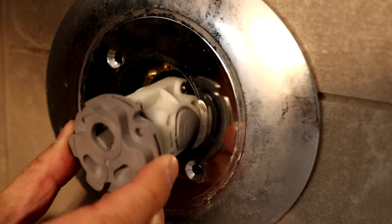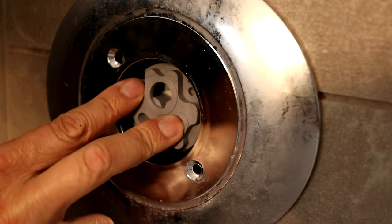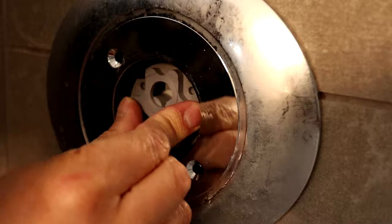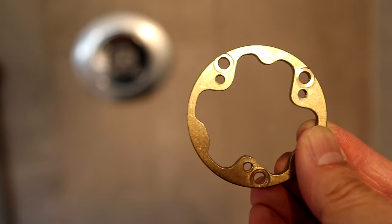Now just slip the new pressure balancing unit into the opening. Remember the round opening is at the top and the oval openings are at the bottom. And here's the orientation of the retaining ring when it goes back on with four screw holes at the top.